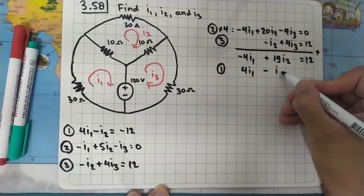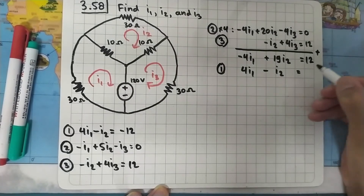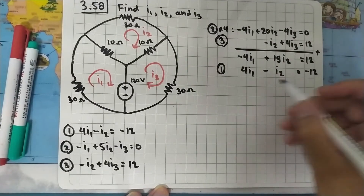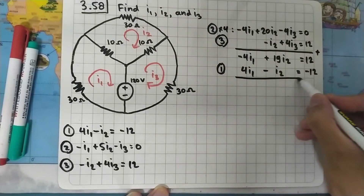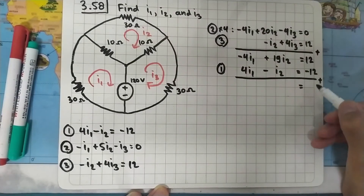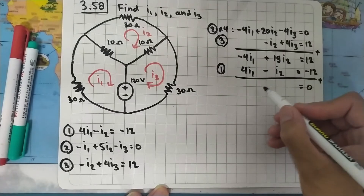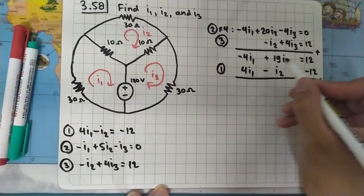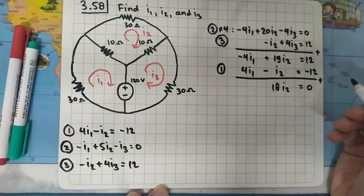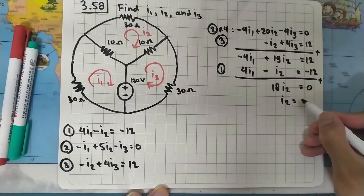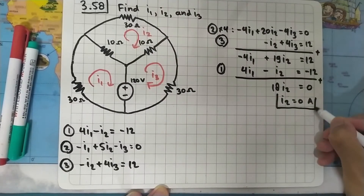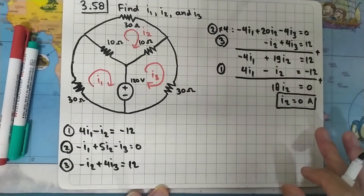Now I can eliminate i1 by adding equation 1 (4i1 minus i2 equals minus 12) to the combined equation. The i1 terms cancel, leaving 18i2 equals zero, so i2 equals 0 amperes. We have our first value.